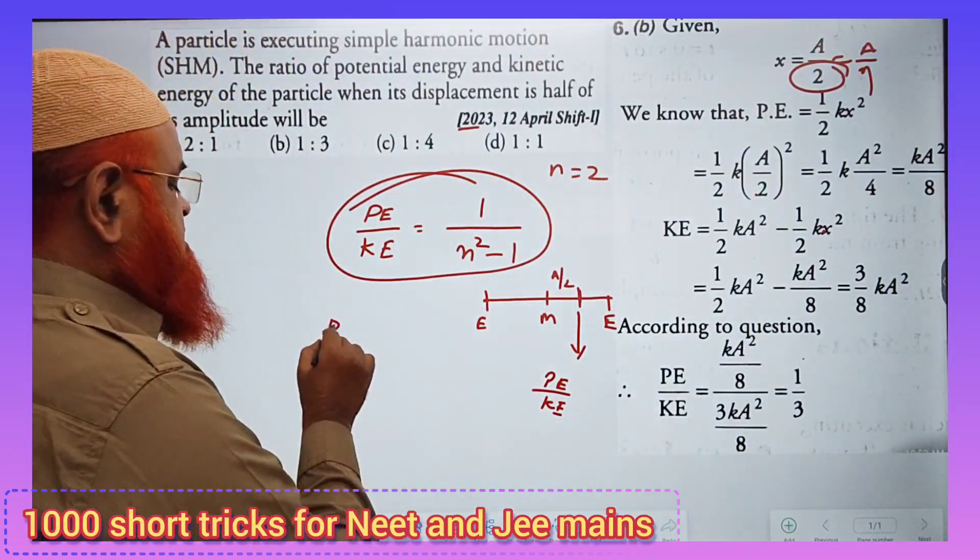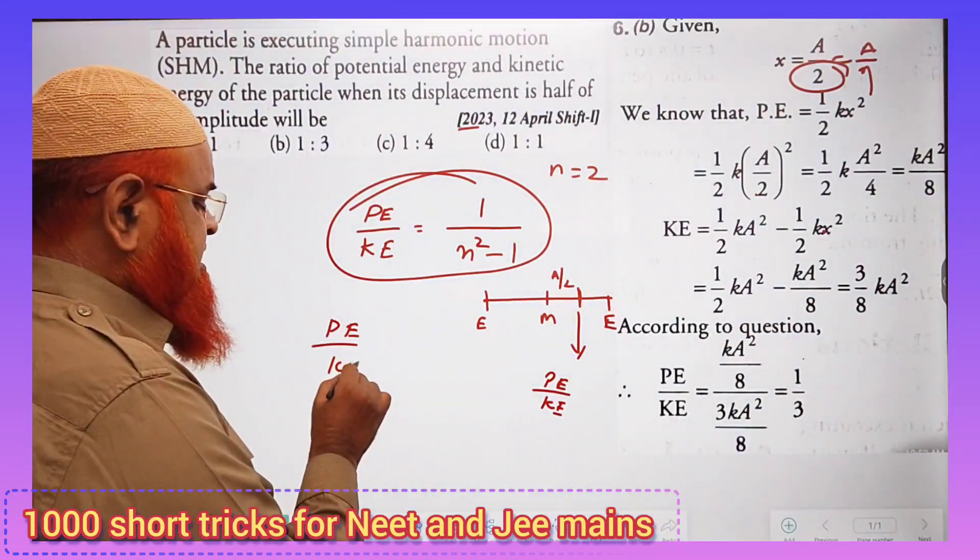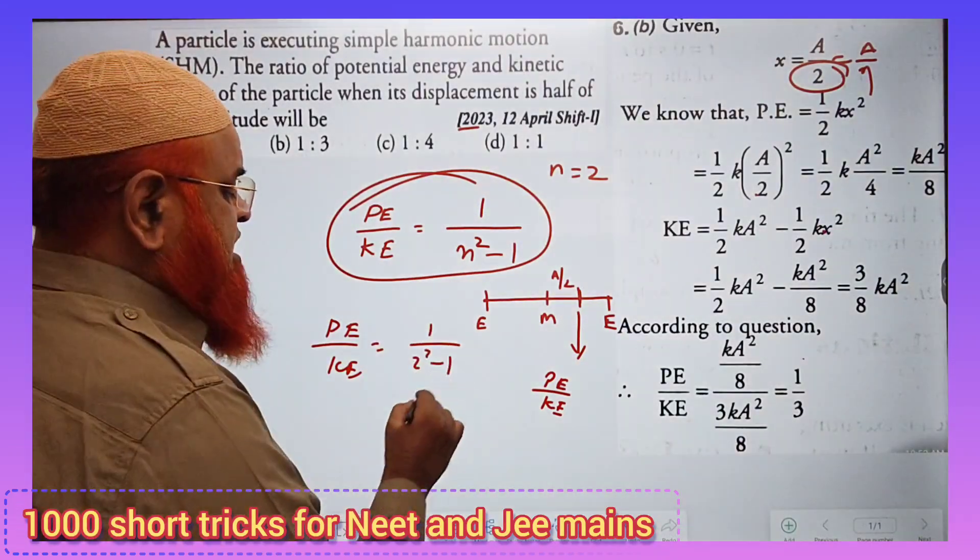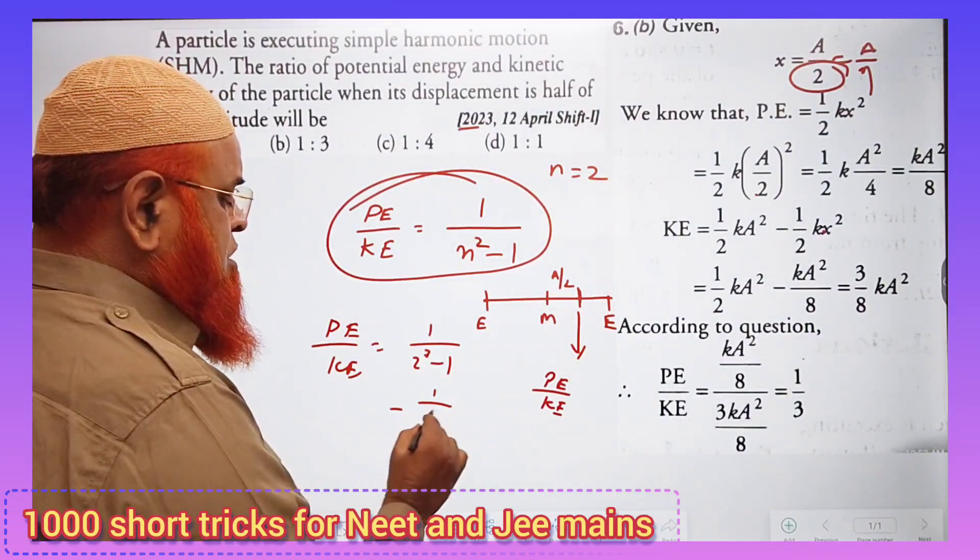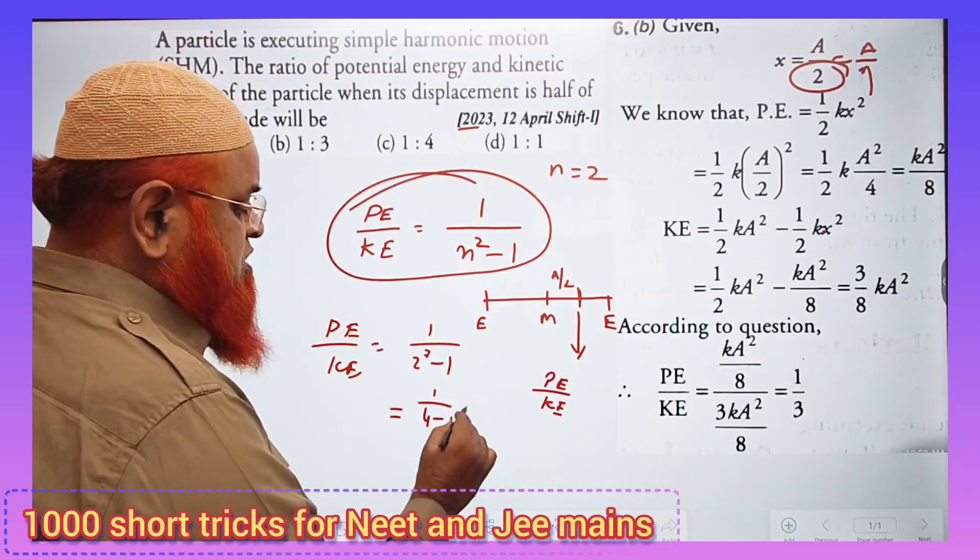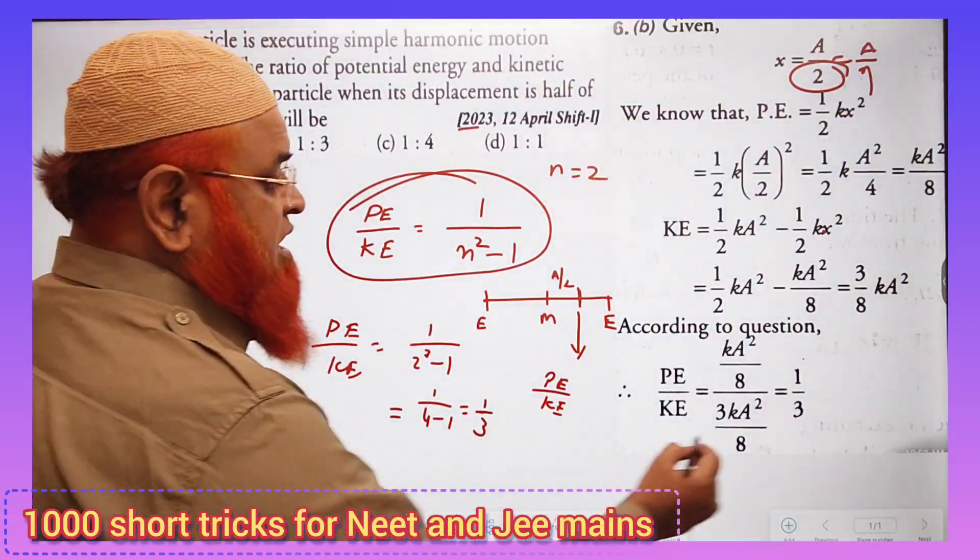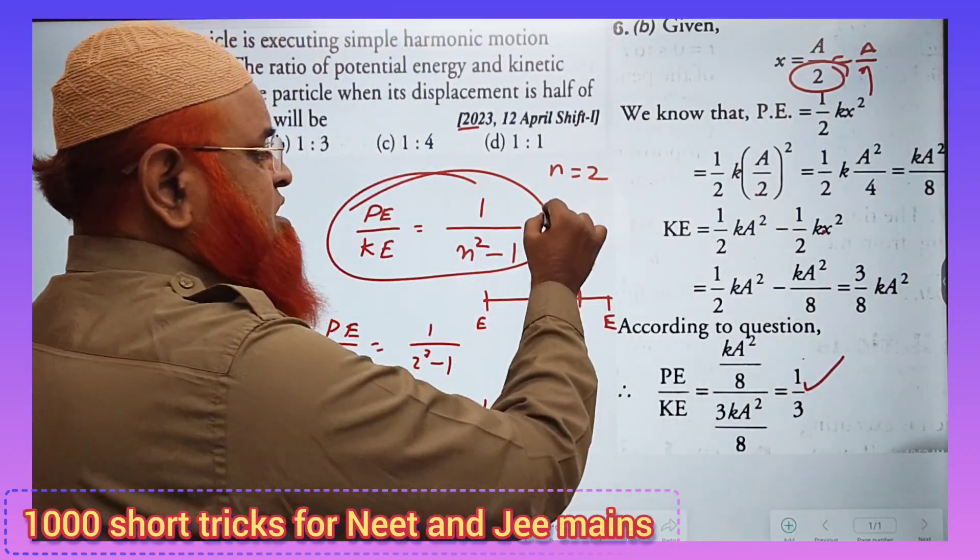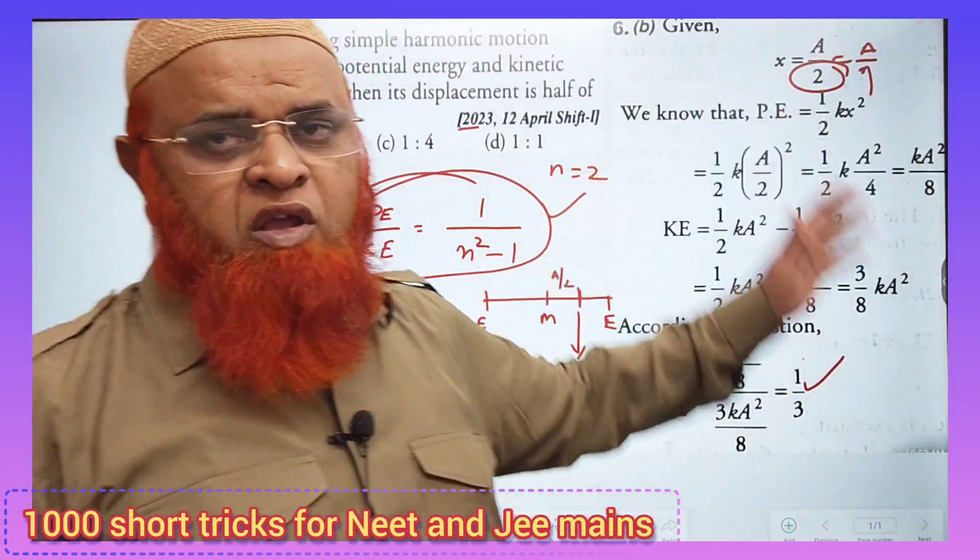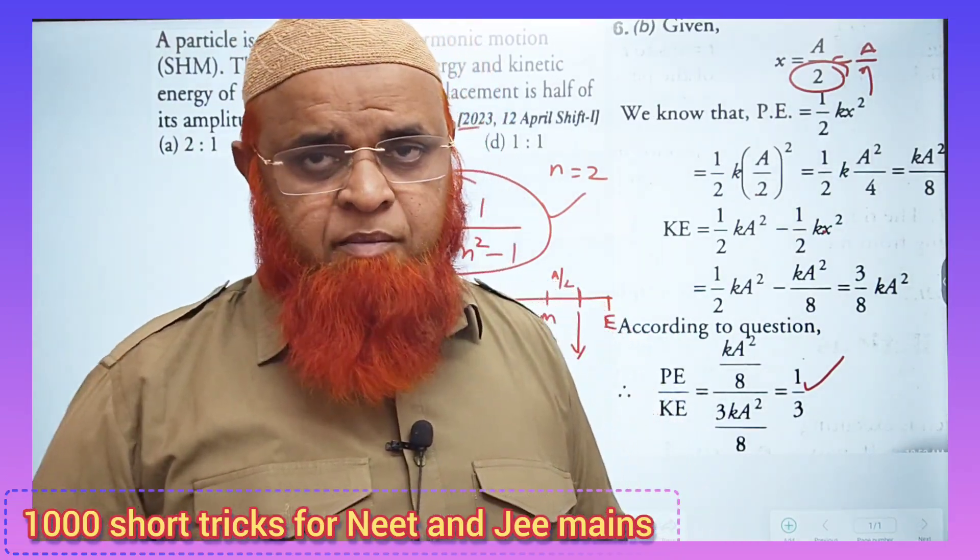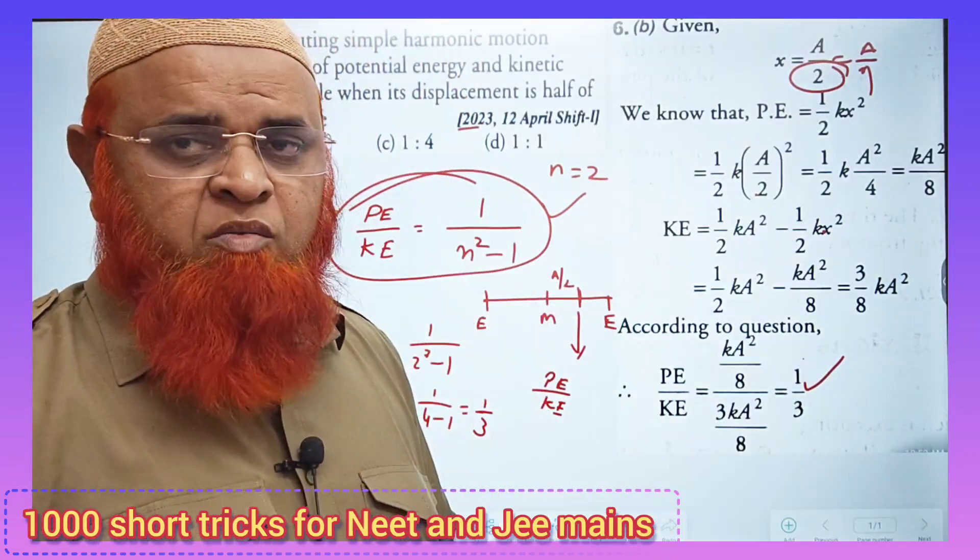What I am going to do here is potential energy by kinetic energy is equal to 1 by 2 square minus 1. That is going to be 1 by 4 minus 1, that is 1 by 3. So we got the answer with just a single step formula instead of following all these processes and wasting your time. Hope you have enjoyed this short trick. Thank you very much. Have a nice day.